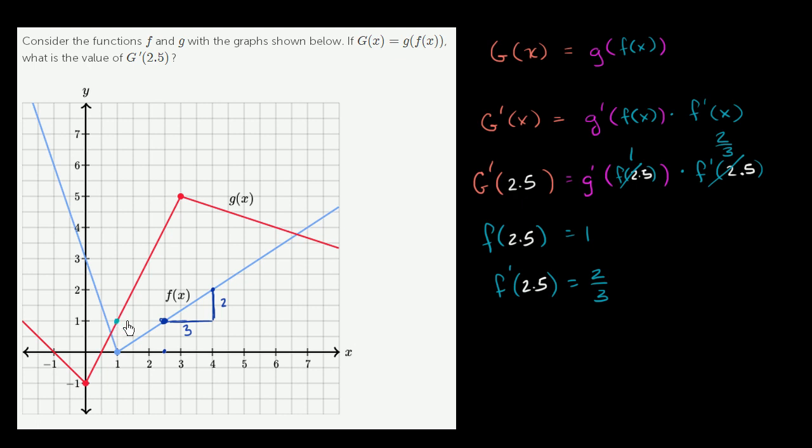Well our change in y over change in x is 2 over 1. If we go 1 in the horizontal direction, we go up 2 in the vertical direction. Change in y over change in x is 2 over 1. So g prime of 1 is equal to 2.